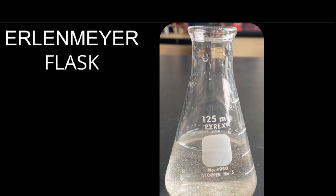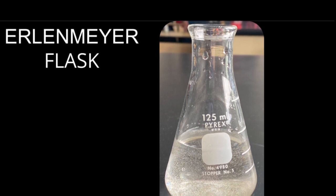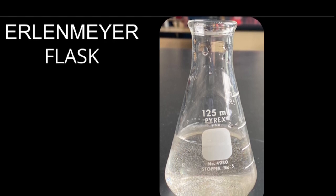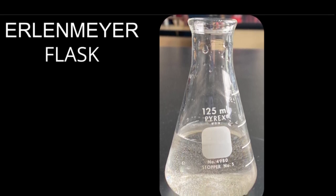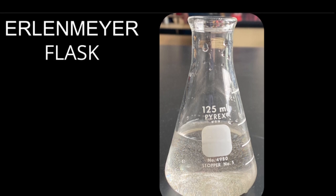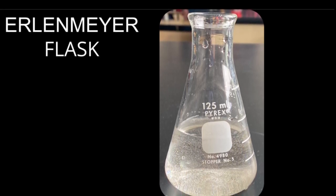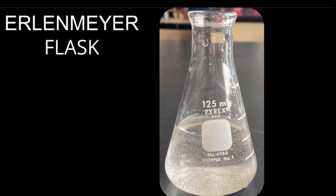An alternative to a beaker is an Erlenmeyer flask. A single flask ranges between three to a hundred dollars, which is similar to a beaker depending on the quality and volume of the liquid it holds. It is a type of chemistry flask. It has a cylindrically shaped neck and a flat bottom like a beaker. It also has measurement marks on the side, but it has a cone-shaped body.